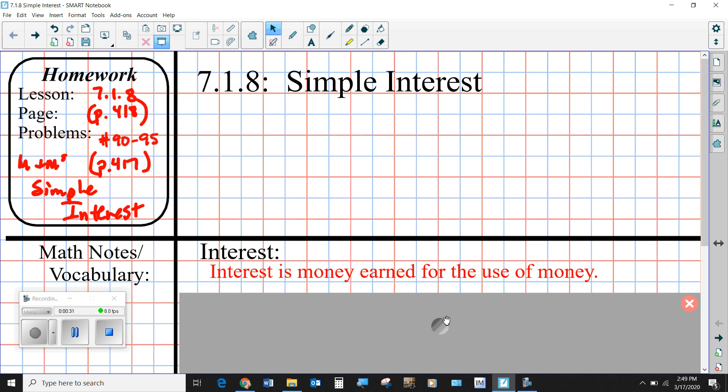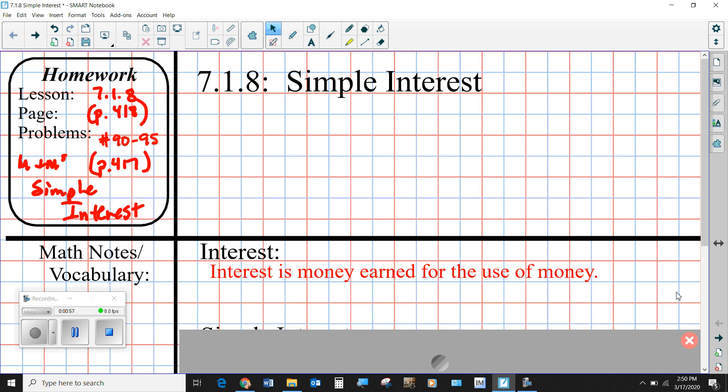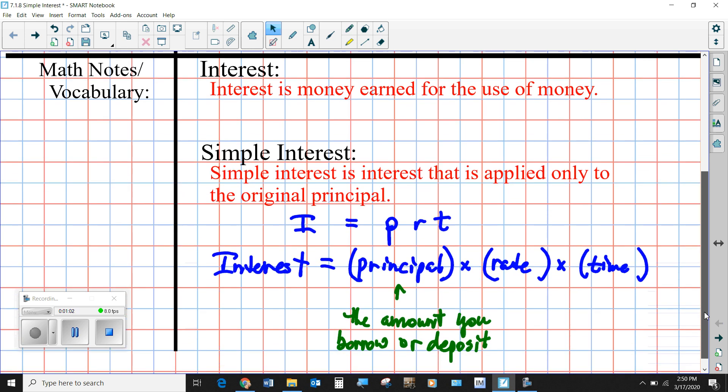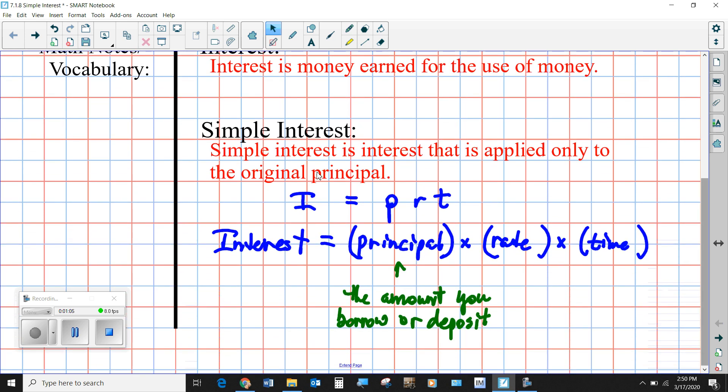So first of all, interest is money earned for the use of money. You normally have interest if you deposit money into an account and the bank pays you a small amount of interest every single month or year, or more commonly when you take out loans for a car, home, or small business. The bank will lend you the money and charge you an interest rate, which you have to pay back in addition to paying back how much you borrow.